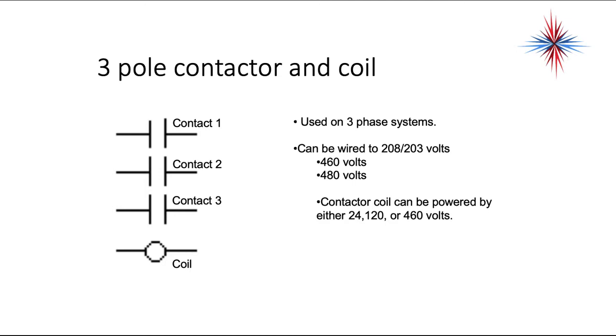This is an example of a three pole contactor and a coil. We have a coil, that's our control component. It's our load. This becomes energized, and then all three contacts close simultaneously.